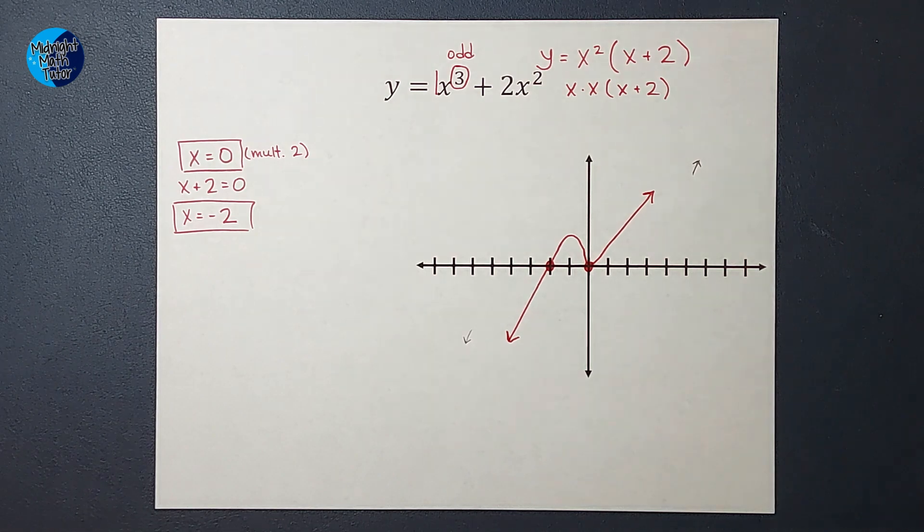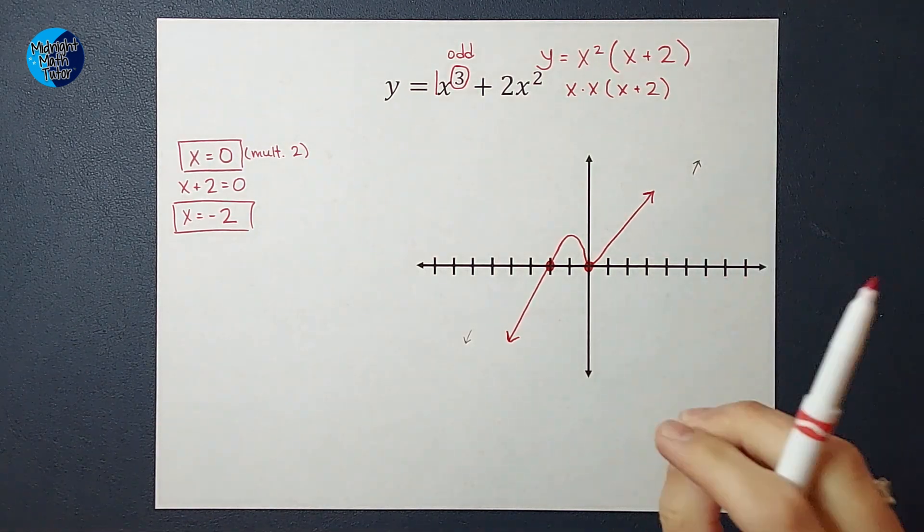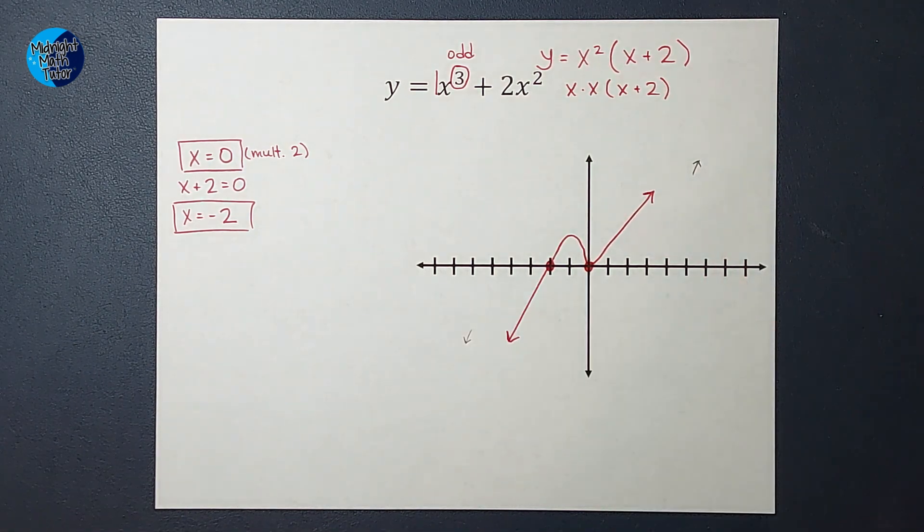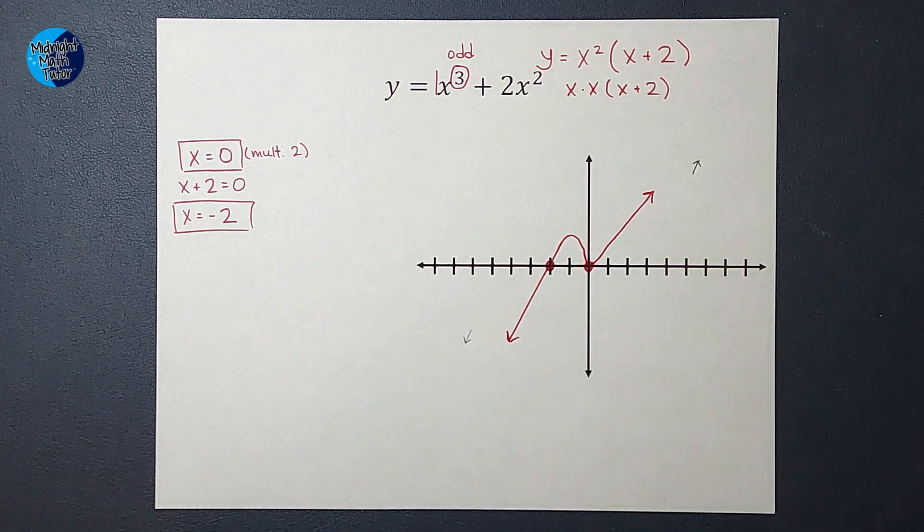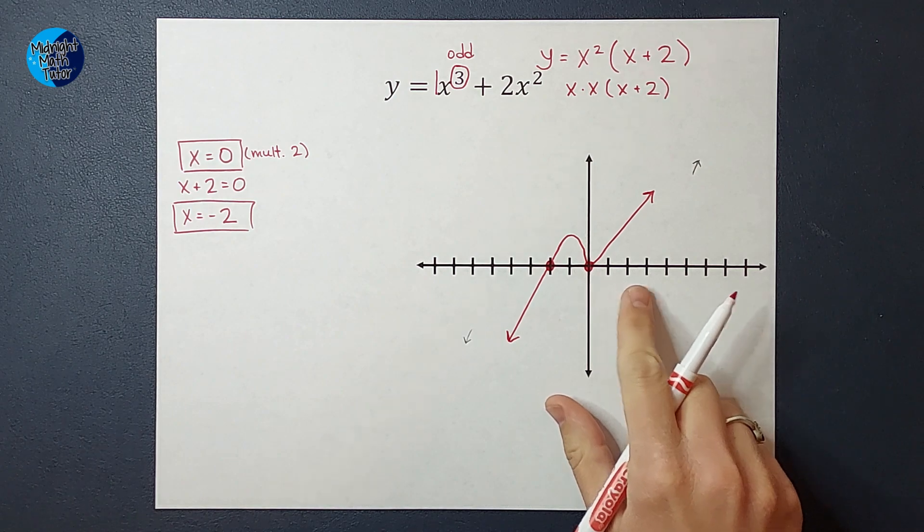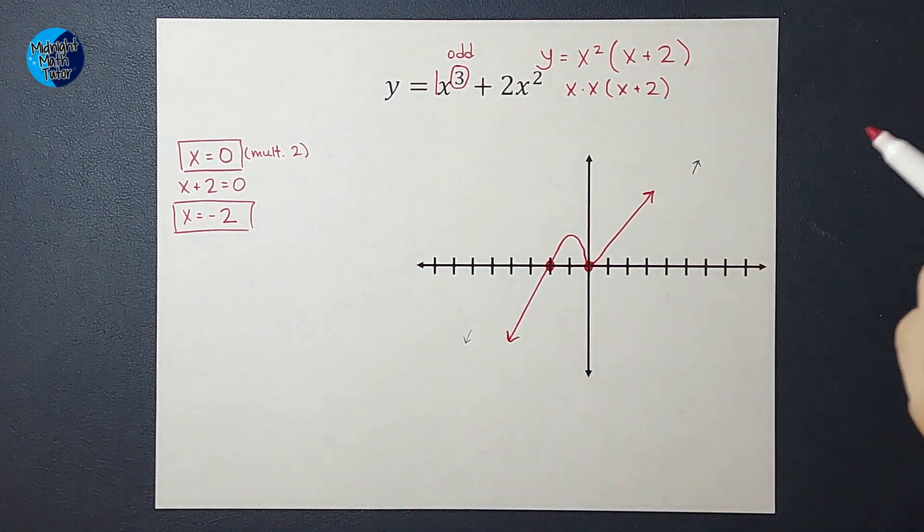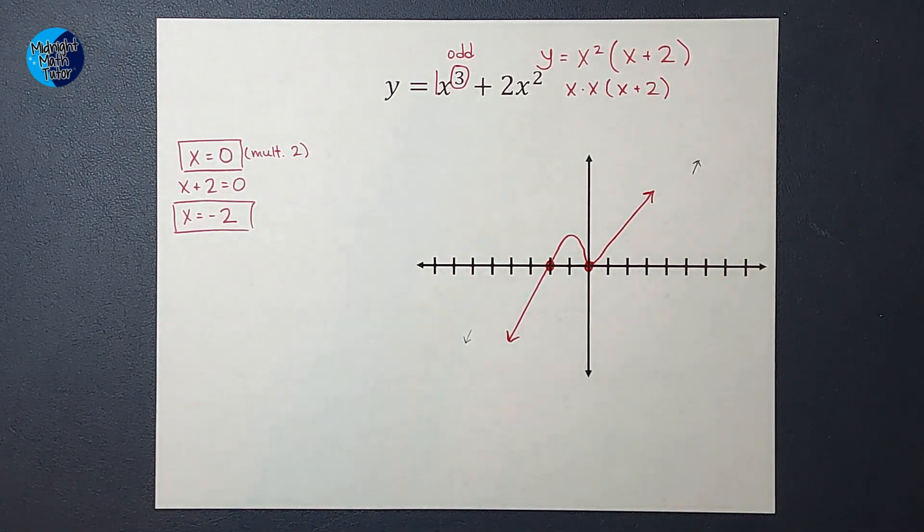Oh my gosh. Okay, so my optional fourth step would be to plug in some more points. So you'd probably, you'd want to do this step before you drew it, to plug in some more points like negative one, to find out exactly how high that bump is, or to plug in one, two, three and get some more points.